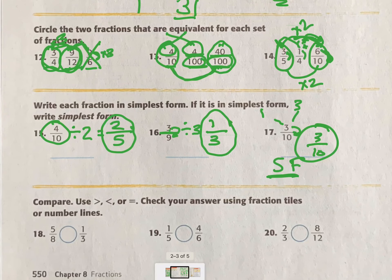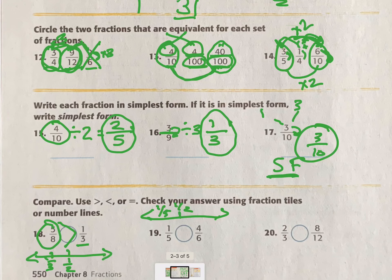And then the bottom of this page, we're comparing 5/8 compared to 1/3. Well, here I can use benchmark fractions. With 1/2, I know 1/3 is less than 1/2. And I know 5/8 is more than 1/2 because 4/8 is 1/2. So 5/8 is greater than 1/3. I can do the same thing here, comparing them with that 1/2. 1/5 is definitely less. And 4/6 is greater than 1/2 because 3/6 is 1/2. So 1/5 is less than 4/6.